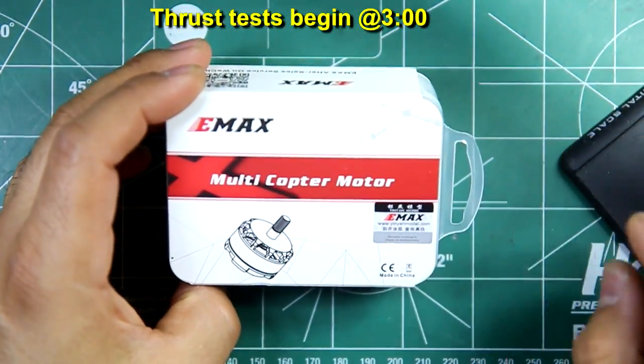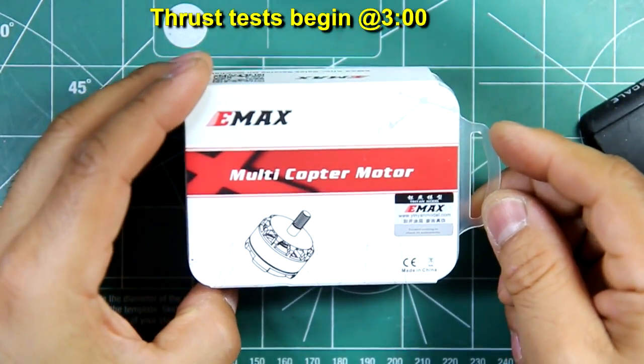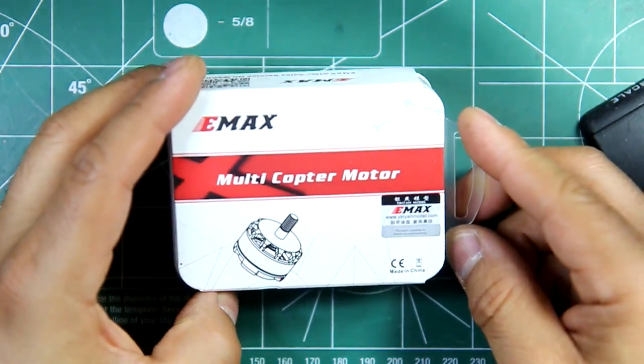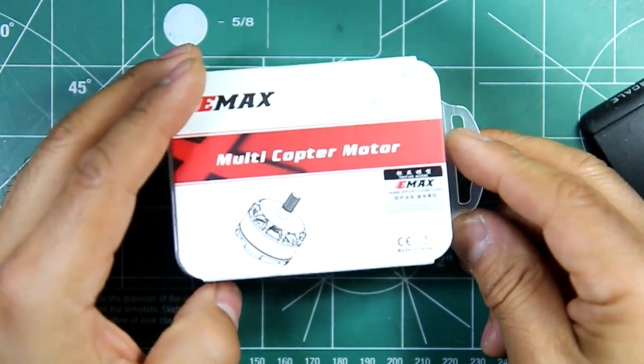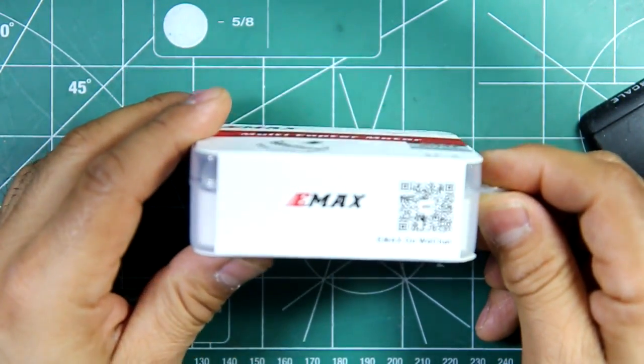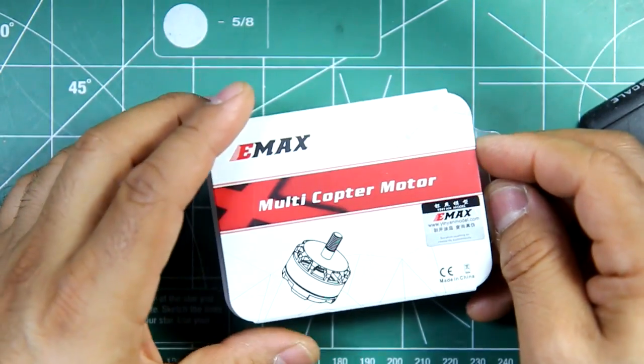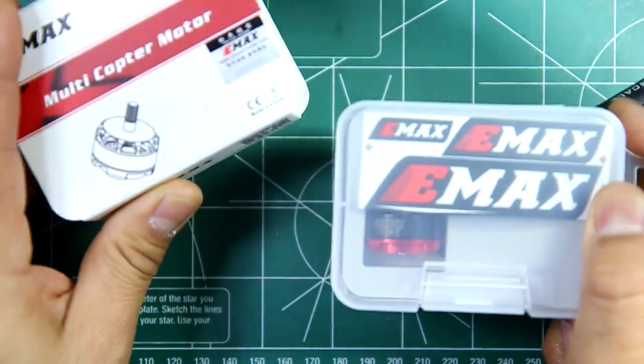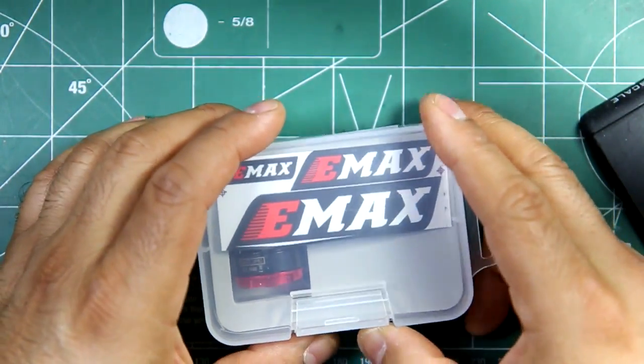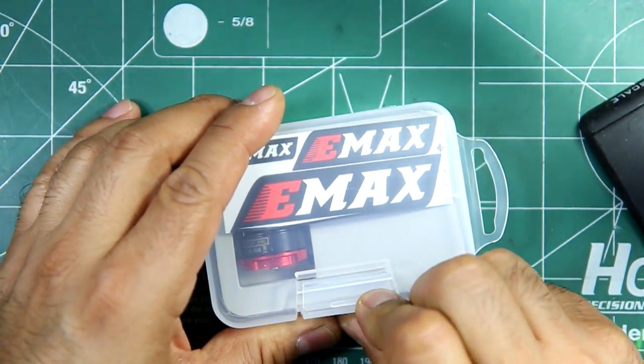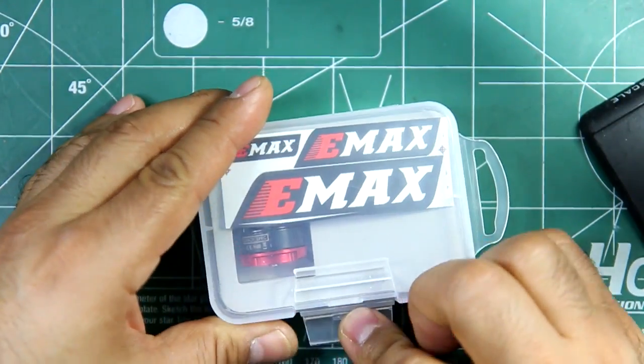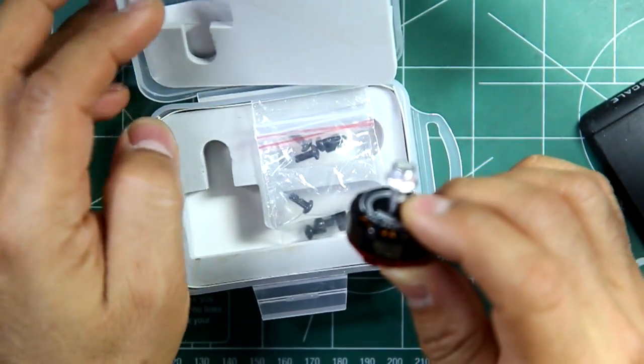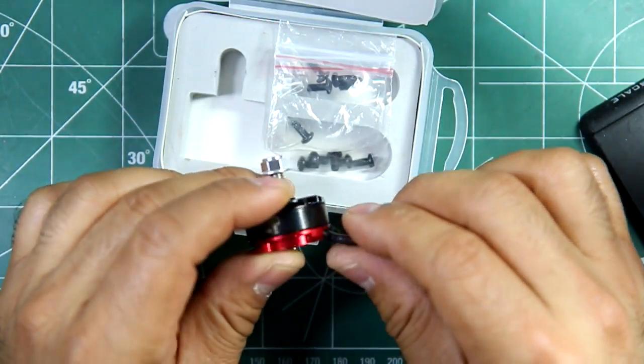So EMAX finally released the retail version of the RS2205S 2300 motor. I believe also the 2600 has already been released. So I previously tested the prototype version, and with the final version they made a few changes, small changes that actually do make a difference.